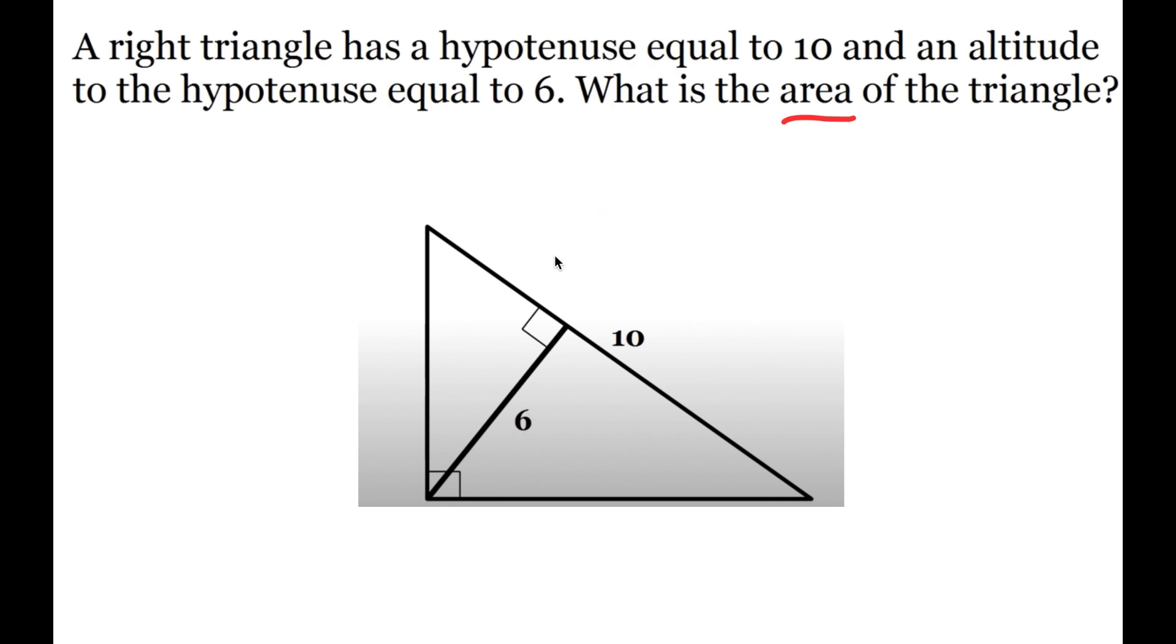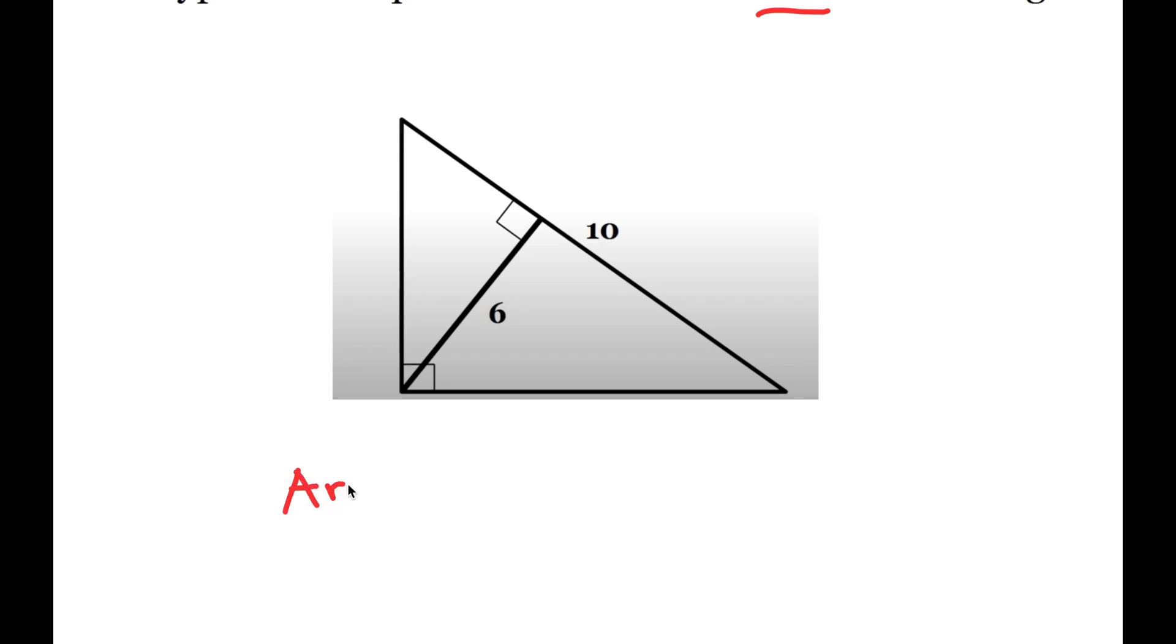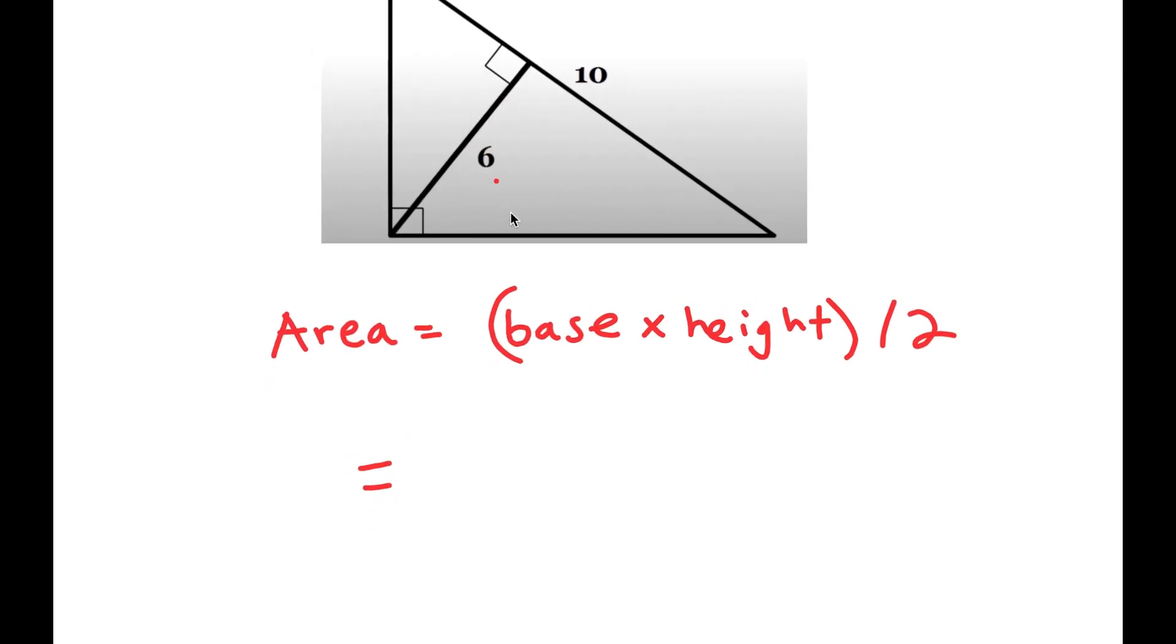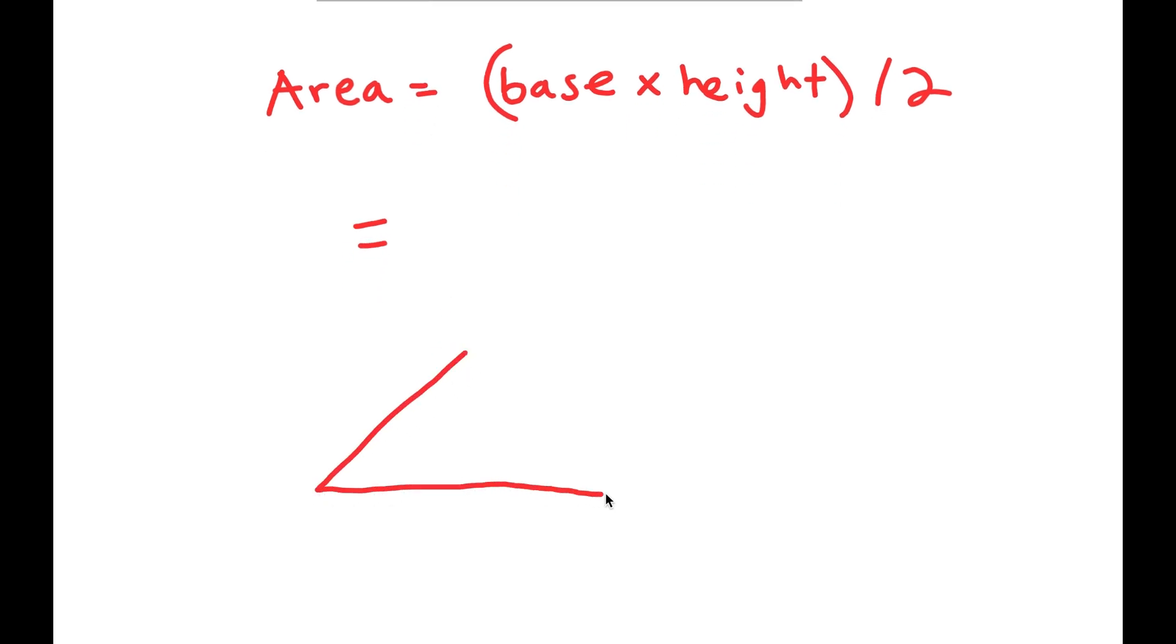Well, we know that the area of a triangle is equal to base times height over 2. So, you'd think that this would equal, if we flip this around to look like this, you'd think that the area would be 10 times 6 divided by 2, which is 60 divided by 2, which is 30.